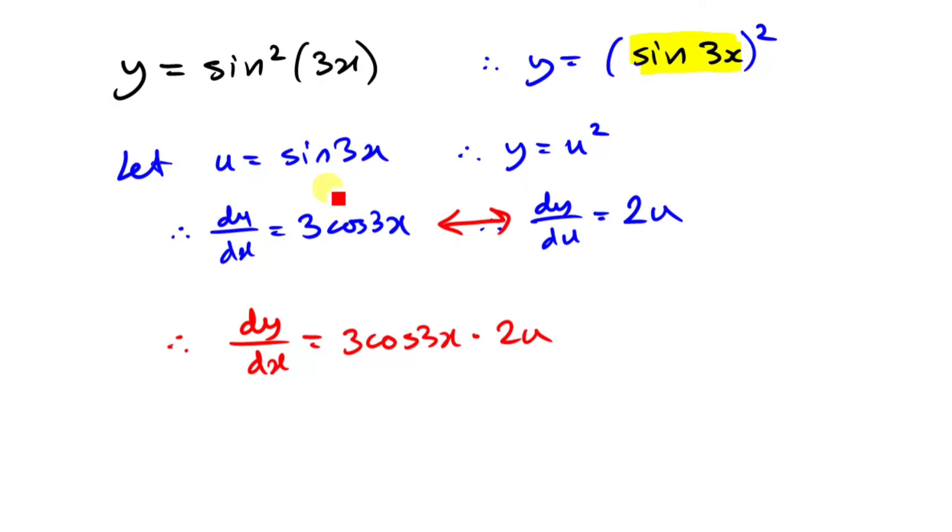And we know what u is, guys. U is just sine 3x. So therefore, our final answer, dy over dx, let's multiply it out. We've got 3 times 2 here, which is 6. We've already got the cos 3x, and now we've got also sine 3x. So I'm going to rewrite it this way, 6 sine 3x cos 3x. And that's it. This is your final answer.